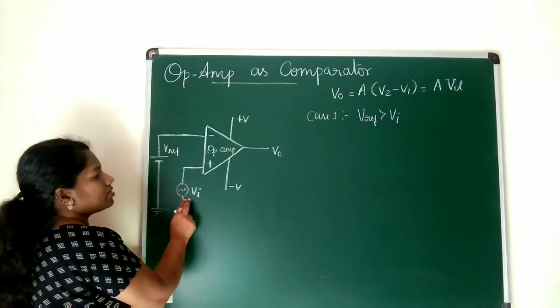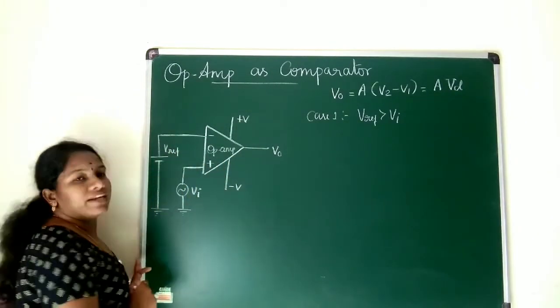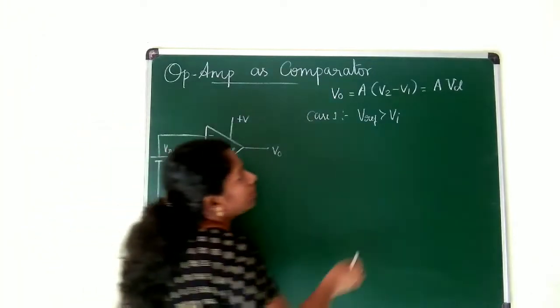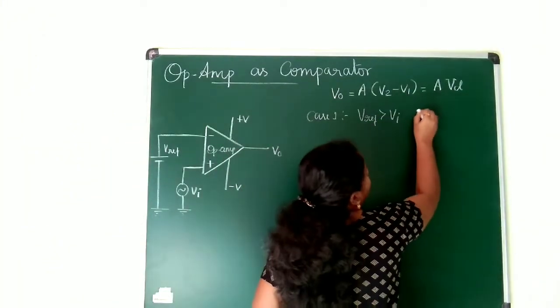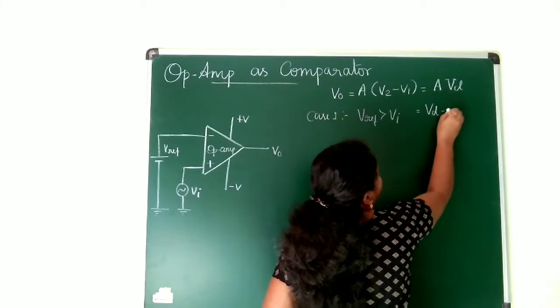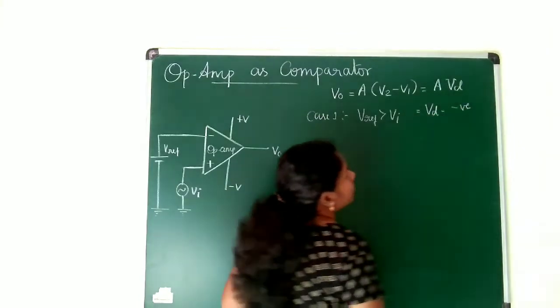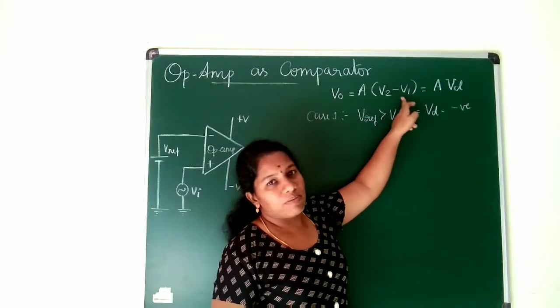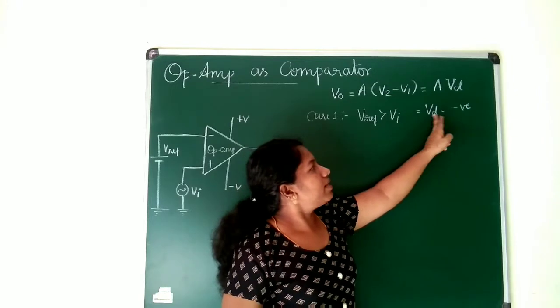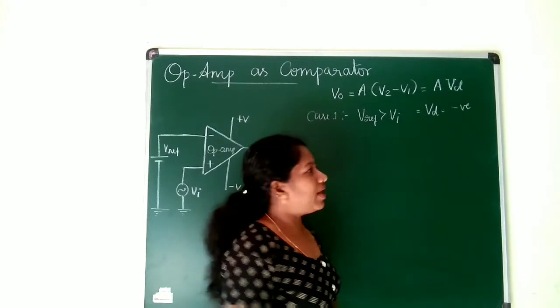This VI is lesser than V reference. What happens? See V2 minus V1. So what will be your VD? VD will be a negative value. When V1 is greater than V2, you will be getting a negative value. So I can write VD is equal to a negative value.